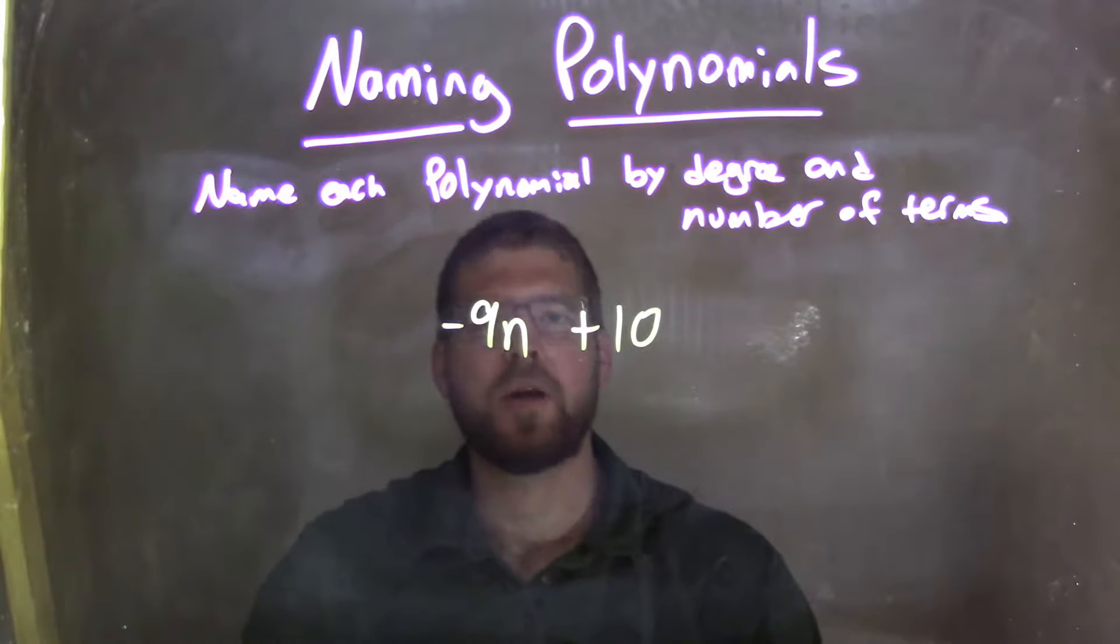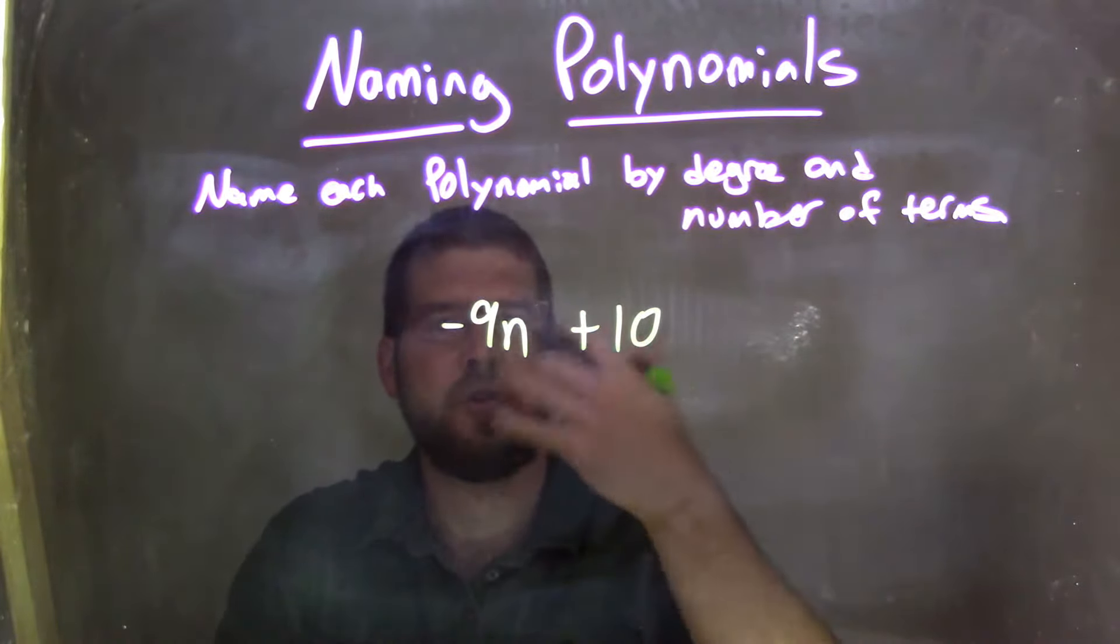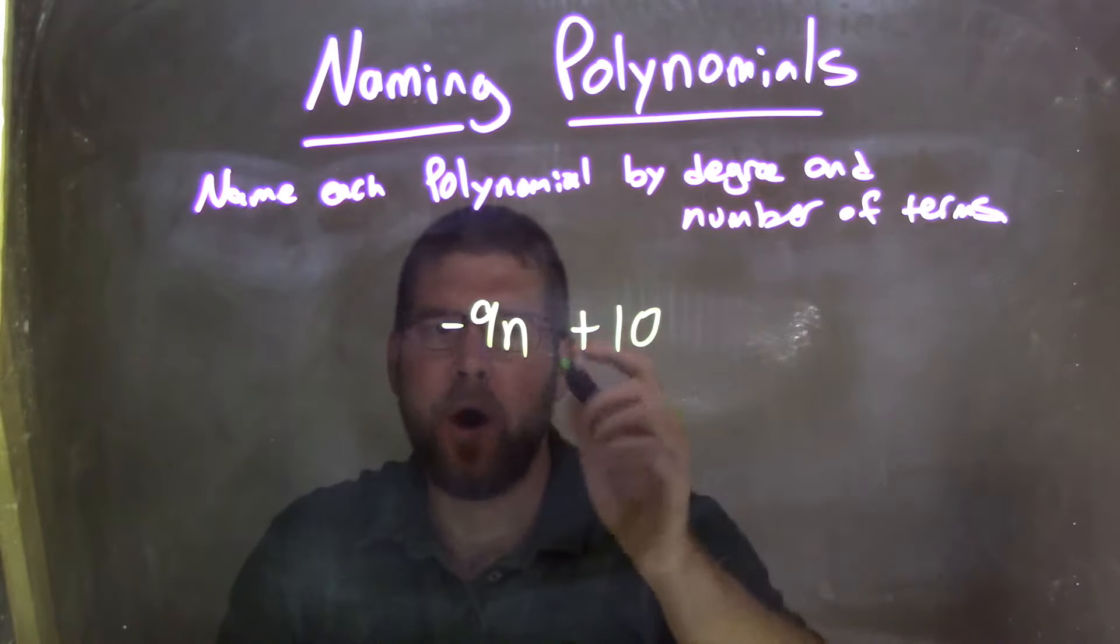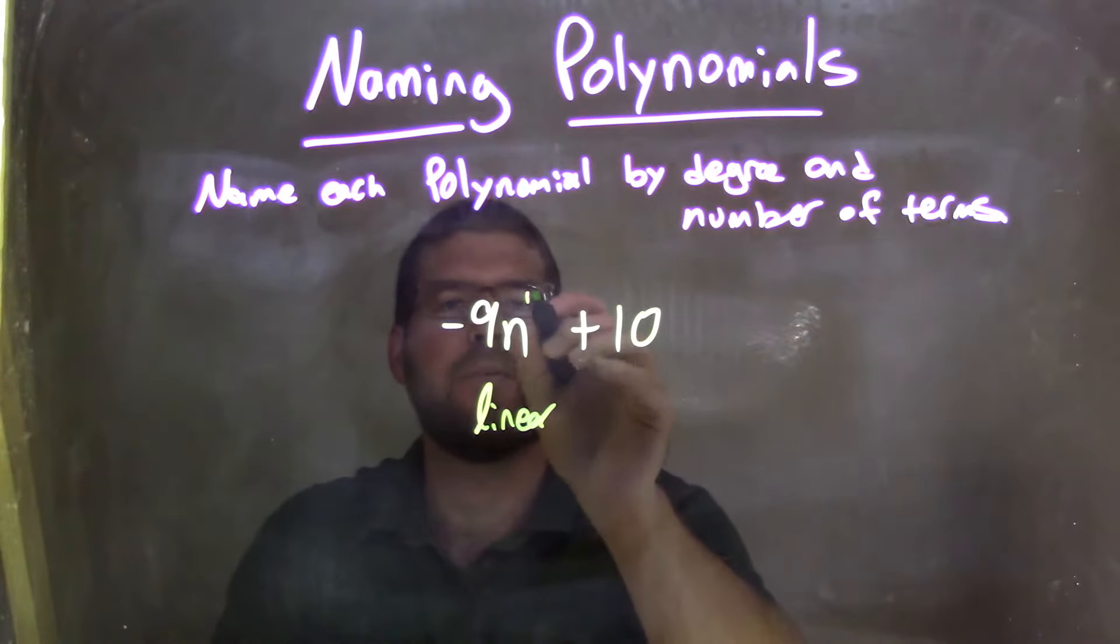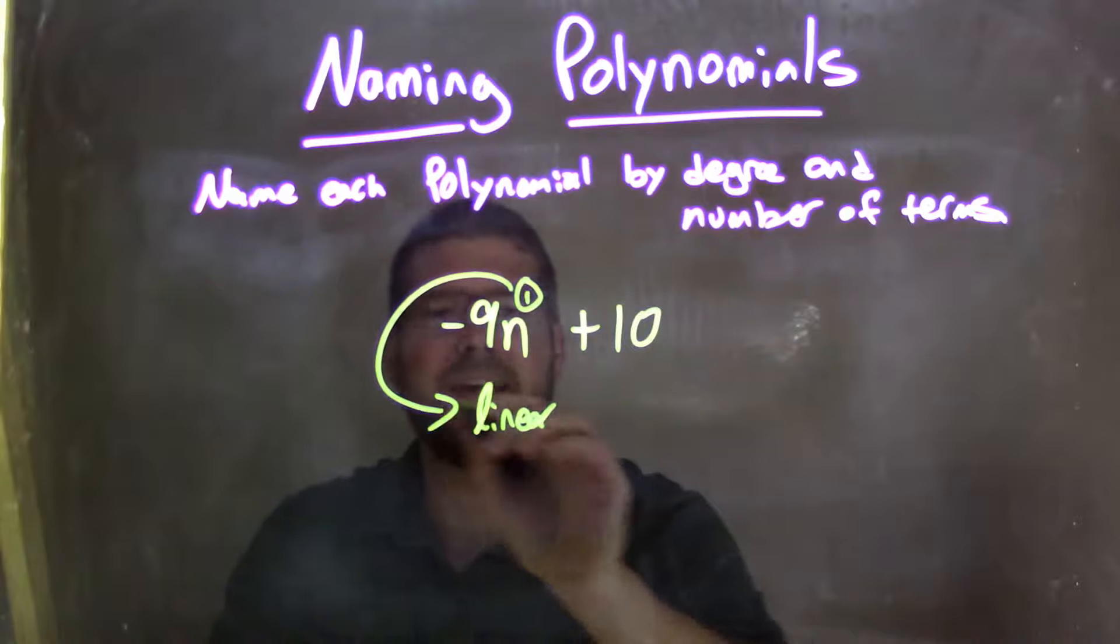The first thing I'm looking at is that n. That n is really to the first power, has a degree of 1. That 1 helps me determine that this polynomial is linear. So that degree tells me it's linear.